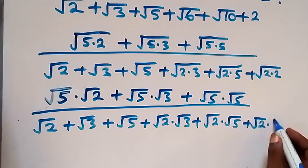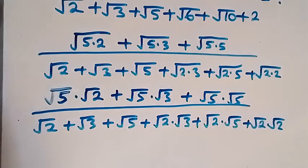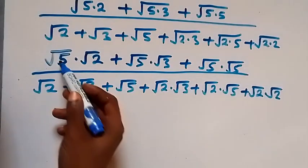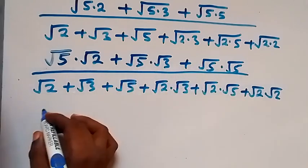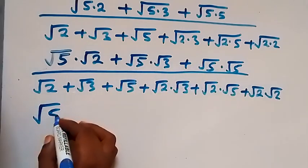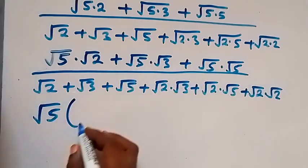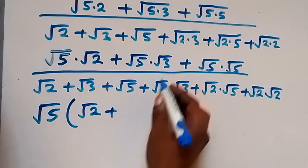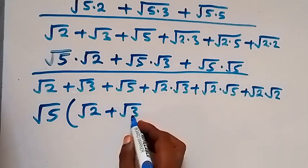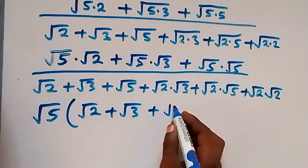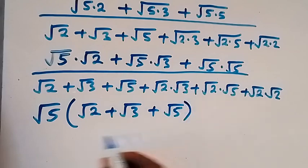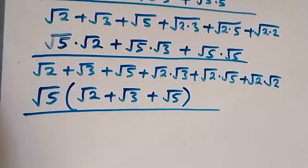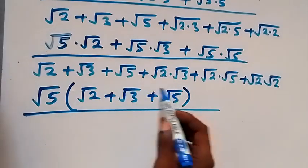In the next term in the numerator, we have root 5 common. When we take it out, we have root 5 into bracket: root 2 left here, then plus root 3 left here, then plus root 5 left here, then all divided by the denominator.